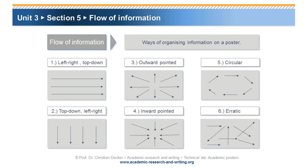Due to the fact that an academic poster is a self-guiding entity and is generally interpreted by the participant or viewer alone, and only in certain cases will the author of the poster be there to field questions, the flow of information is of vital importance. The flow of information is the way of organizing information on a poster. This can be done in a variety of fashions: left-right top-down, outward-pointed, circular, and more. The important aspect is that the viewer can derive a clear path through which they should view the poster and arrive at the conclusions. An erratic fashion of organizing information on a poster is not conducive to an academic presentation, as the viewer first needs to find an orientation before being able to comprehend a poster. This can be likened to an oral presentation in which the various components — beginning, middle, and end — are thoroughly mixed, hampering the comprehension of the presentation by the audience.